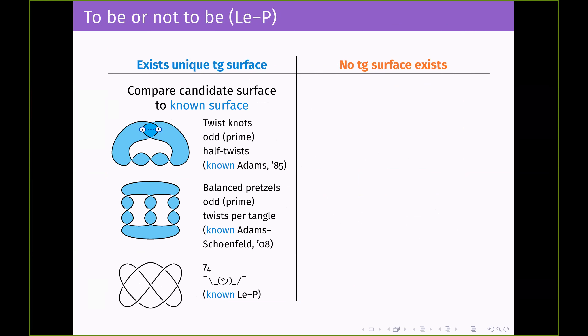For the existence and uniqueness of totally geodesic surfaces, the idea is to take a known totally geodesic surface and a candidate surface, then show that all candidate surfaces fail and we only have the known one. We've got three families: the twist knots with odd prime half-twists — that's been known since 1985 thanks to Colin Adams, and the totally geodesic surface is a thrice-punctured sphere. Then there are the balanced pretzel knots with odd prime twist per tangle, where the totally geodesic surface is the Seifert surface — a once-punctured torus, from Adams–Schoenfeld. And Khánh and I showed there is a twice-punctured torus that is totally geodesic in the knot 7₄, though it doesn't show up nicely in the diagram.